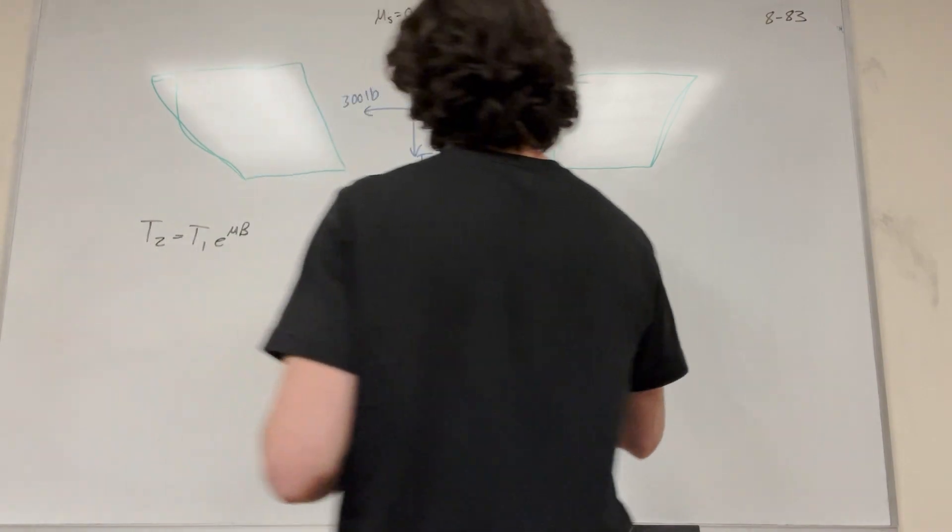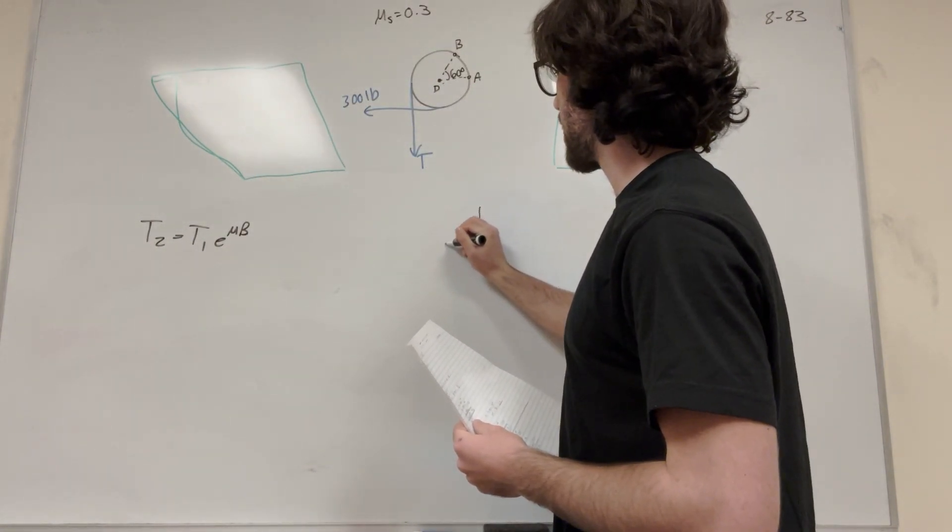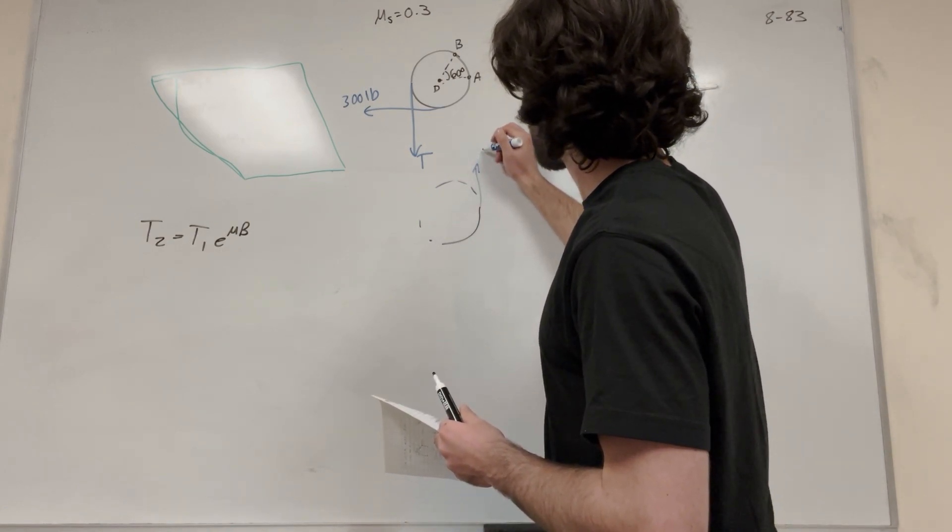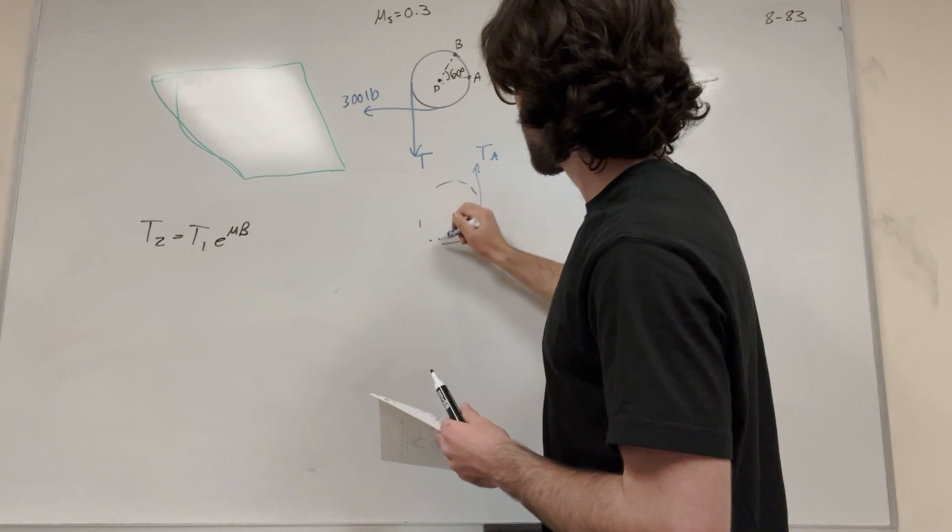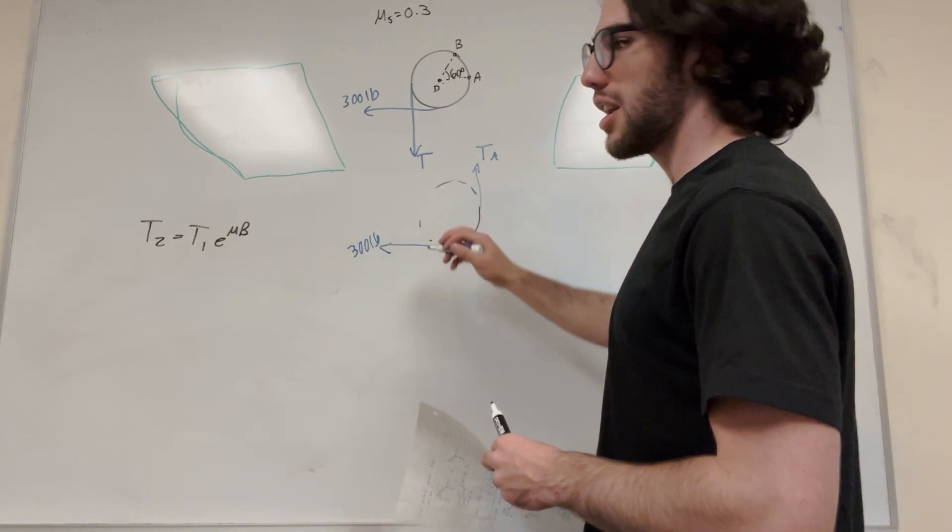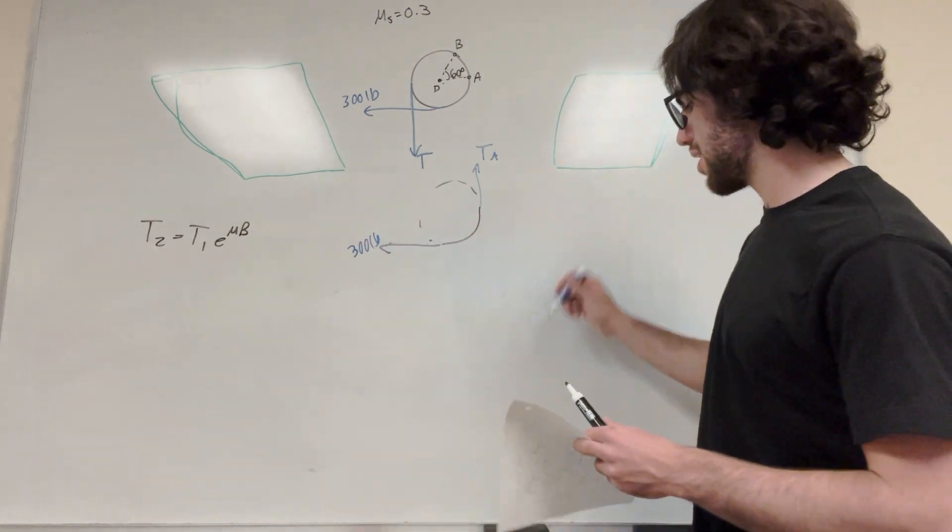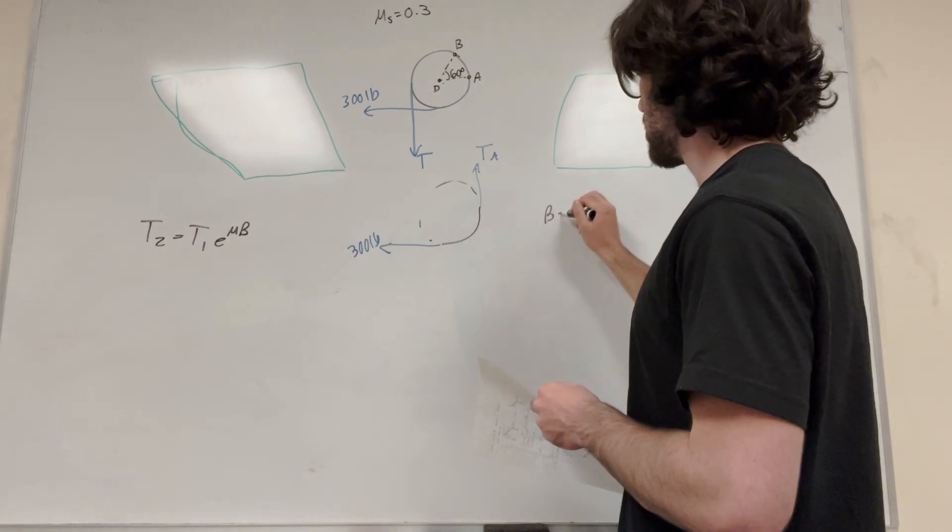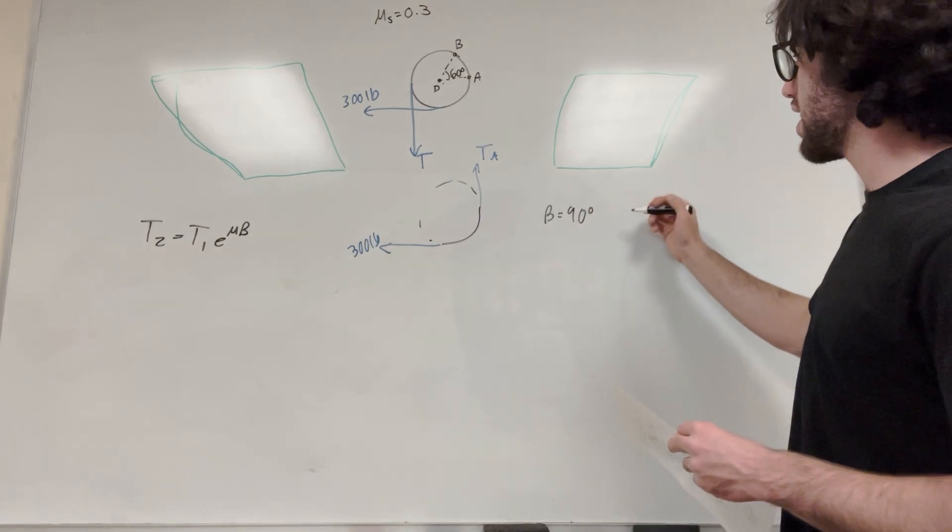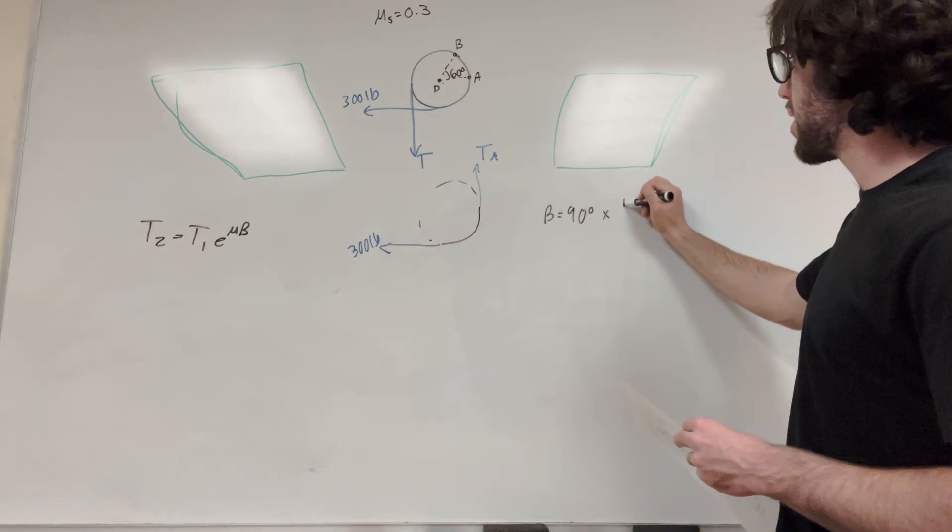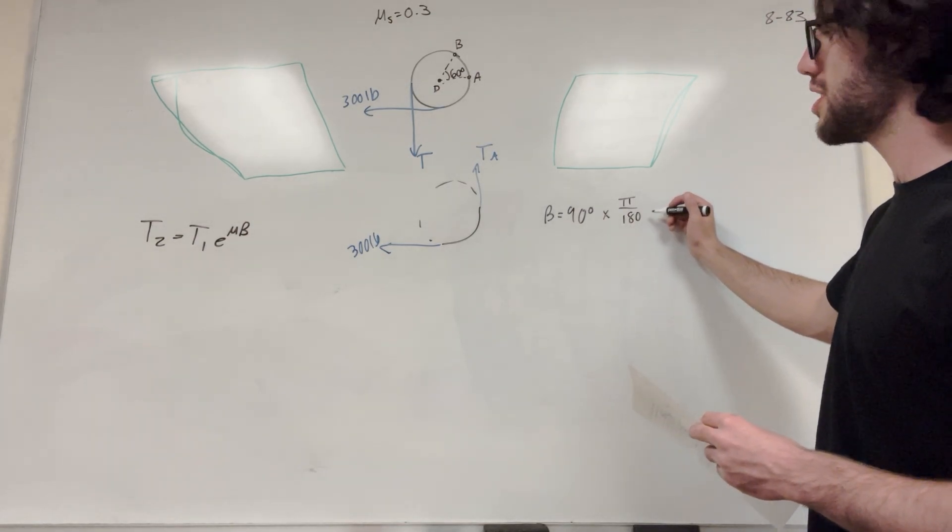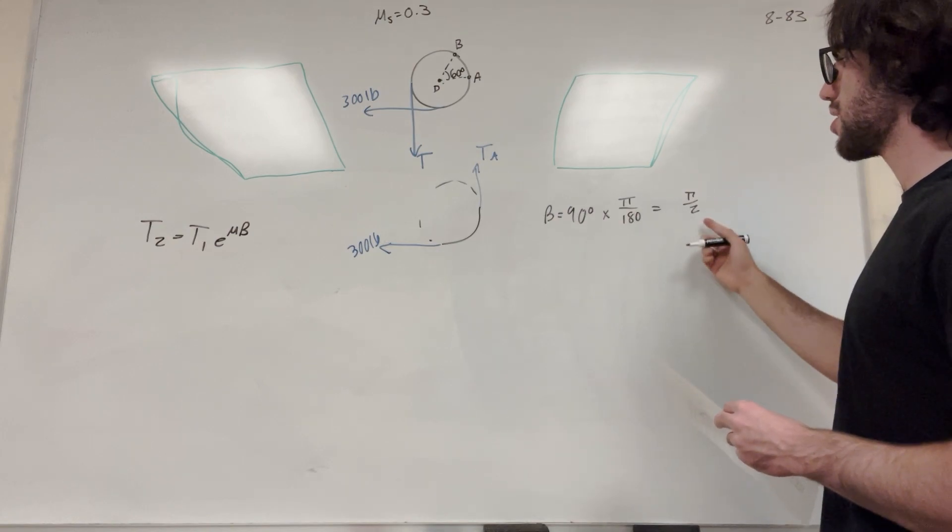So let's start with point A. So point A in our system is going to look like something like that. Now we're going to have, this could be tension of A and then this is our 300 pound. Right? So this is a 90 degree angle. So that's what our beta is going to be. We can just go ahead and say beta is equal to 90 degrees. And we want beta in radians. So if we want to convert this to radians, we're going to multiply it by pi over 180 because there's one pi in radians over 180 degrees. So this is going to give you pi over two is our beta.